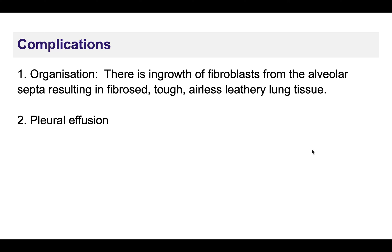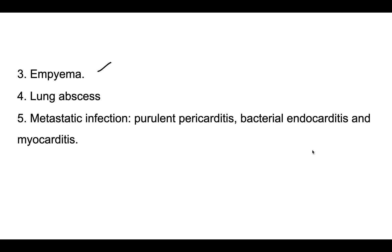While patients can resolve the inflammation, other complications can also occur. There can be organization, where after fibrin formation there is ingrowth of fibroblasts and the area becomes totally fibrosed. Pleural effusion and empyema can develop alongside pneumonia. Lung abscess can occur. Nearby areas can also be affected, including pericarditis, endocarditis, and myocarditis.